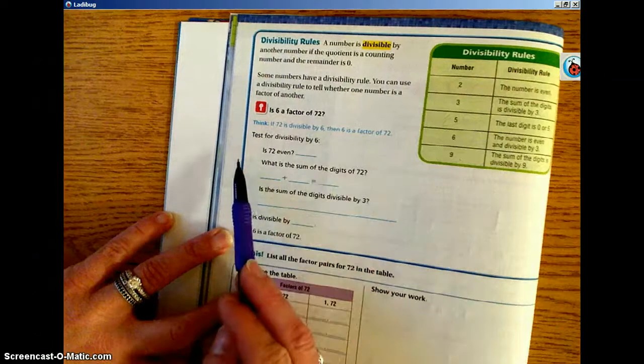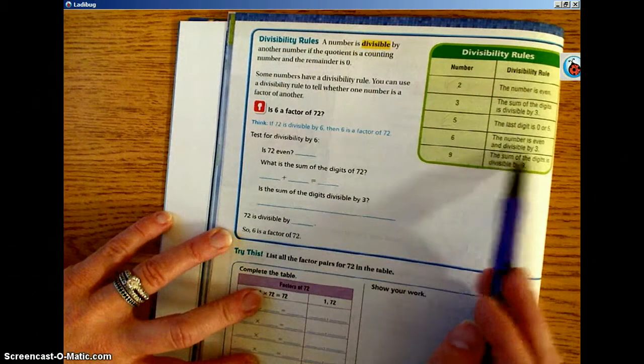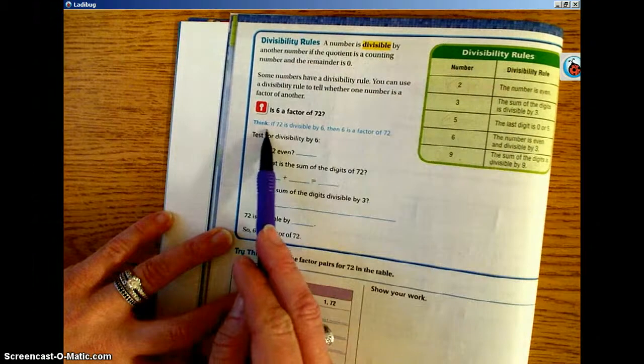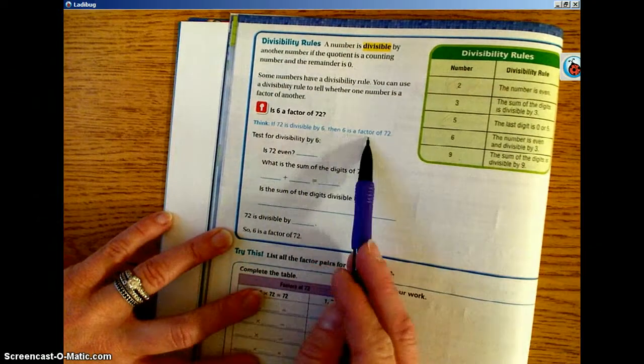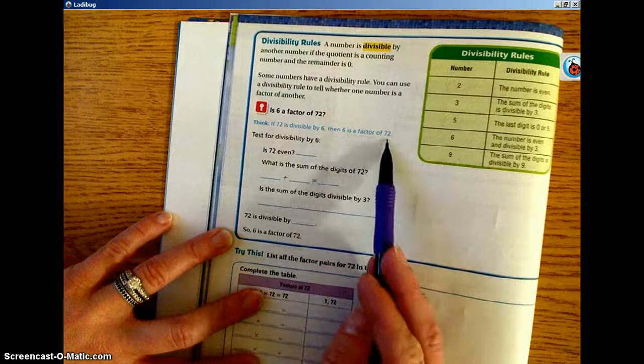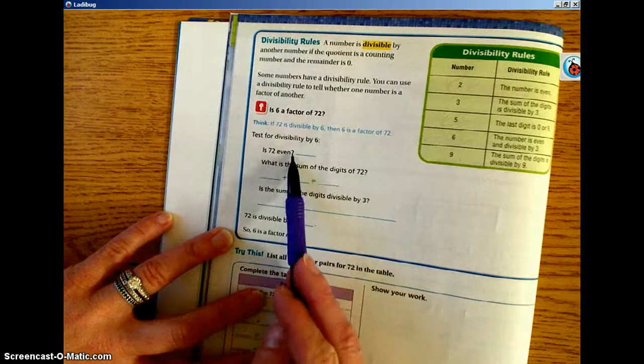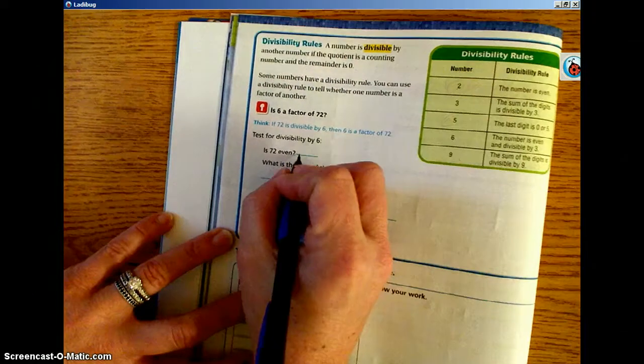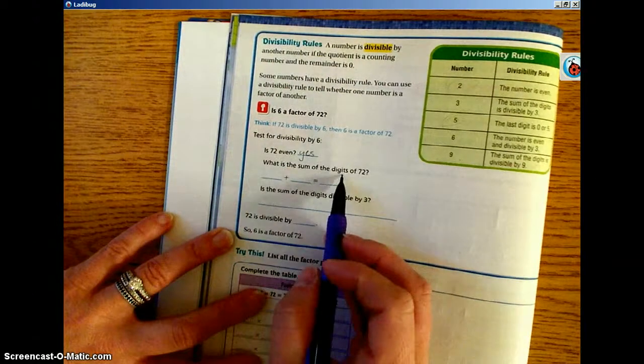So, is 6 a factor of 72? What's our rule? The number is even and divisible by 3. Think, if 72 is divisible by 6, then 6 is a factor of 72. So if we test for divisibility by 6, here we go. Is 72 even? Yes, it's even because it ends in 2. We're going to write yes here.